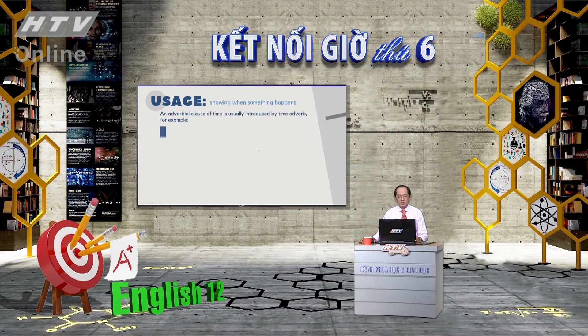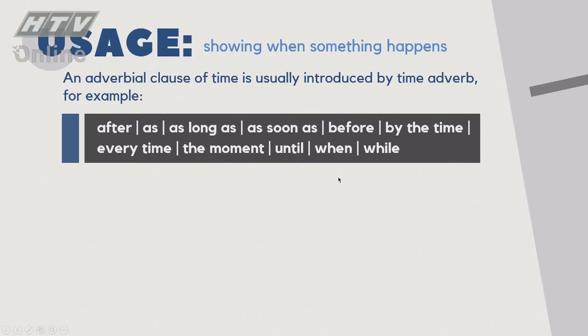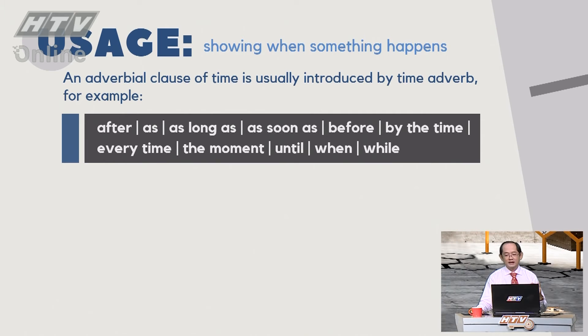We use adverbial clauses of time to show when something happens. An adverbial clause of time is usually introduced by a time adverb. Đối với các mệnh đề trạng ngữ chỉ thời gian, chúng ta thấy nó thường đi với những từ chỉ thời gian, ví dụ như: after, as, as long as, as soon as, before, by the time, every time, the moment, until, when, while.